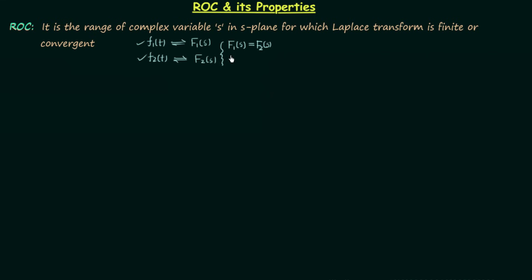For the first signal, let's say the region of convergence is sigma greater than 2. This means the Laplace transform will be finite or convergent when sigma is greater than 2. Sigma greater than 2 gives us a region or area in the s-plane, and this region is known as the region of convergence.